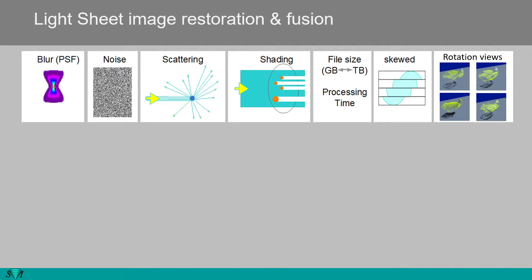Lightsheet images suffer from a number of image-degrading effects, often more severely so than other microscopic techniques, because large and dense objects are being imaged. Examples are blur, noise, scattering of light and shading, when the object or specific parts of it are not transparent. Lightsheet images typically result in large files.